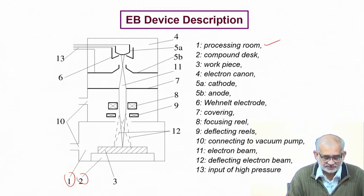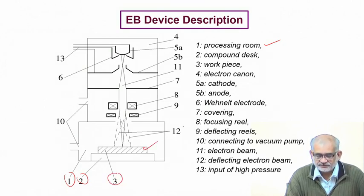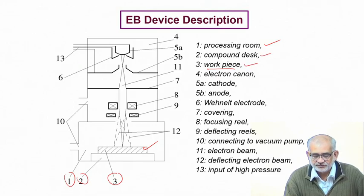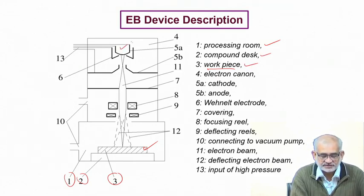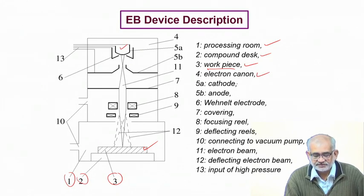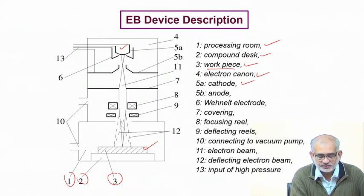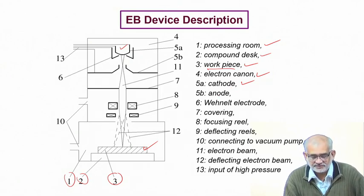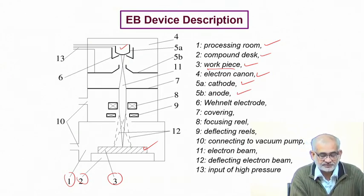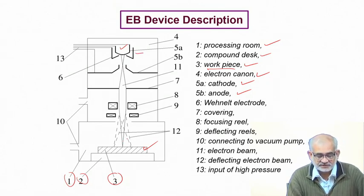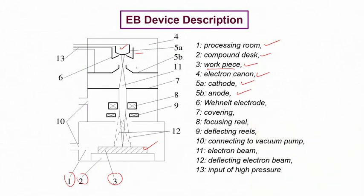The work piece is placed here and you need the electron gun which emits electrons. The cathode emits electrons toward the anode. From the cathode side, emission takes place and electrons flow toward the anode. Through the central opening of the anode, the electrons then flow onward.